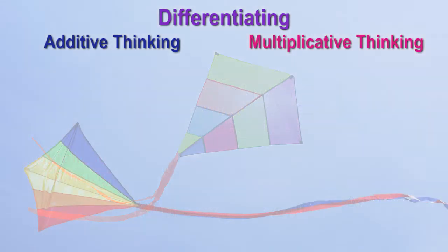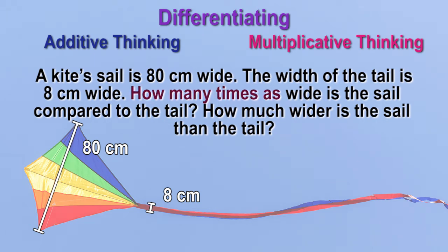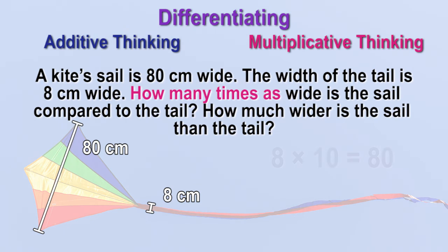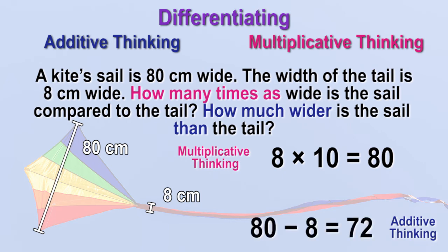Let's try another problem. In this situation, a kite's sail is 80 centimeters wide and the width of the tail is 8 centimeters wide. How many times as wide is the sail compared to the tail? How much wider is the sail than the tail? We determine that 80 is 10 times as much as 8, so the sail is 10 times as wide as the tail — this is multiplicative thinking. Using additive thinking, 80 subtract 8 is 72, so the sail is 72 centimeters wider than the tail.